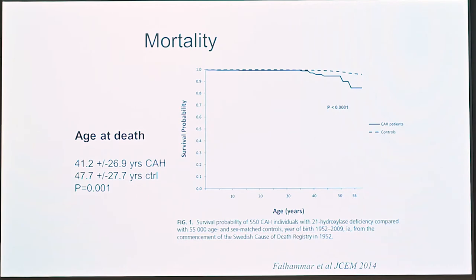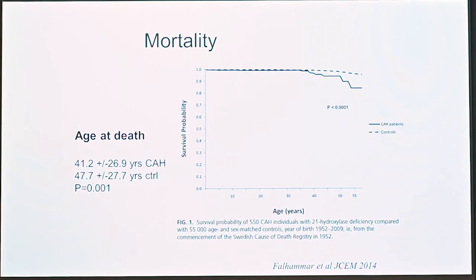We looked in the large registries — the death registry and the cause of death registry. We could see that mortality for patients with CAH is, of course, increased compared to the background population. Although we diagnose most patients in the newborn period and can treat them, when we looked at cause of death, the hazard ratio was above three.